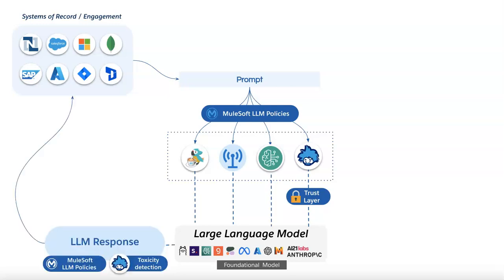The same works on the output side — you can define policies with checks on conditions there. The Einstein connector comes with a trust layer and toxicity detection out of the box, but you can implement the same using the other connectors. Let's take a look at how this looks when you're building an agent.